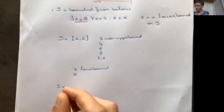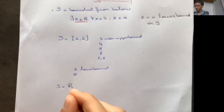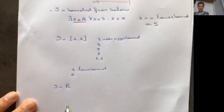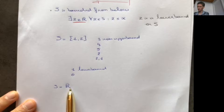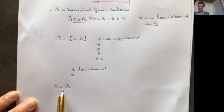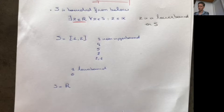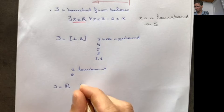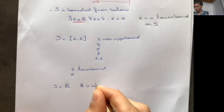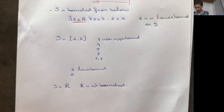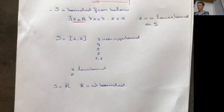If S is the set R, this is also a subset of R, but in this case S is not bounded from above — there's no number in R that's greater or equal to any number in R. S is also not bounded from below — there's no element in R that's lower or equal to any element in R. So R is not bounded: it has no upper bound and it has no lower bound.